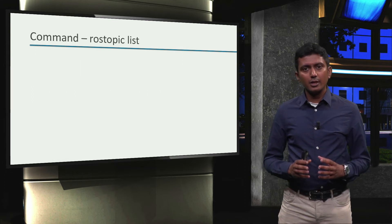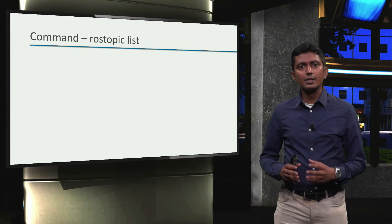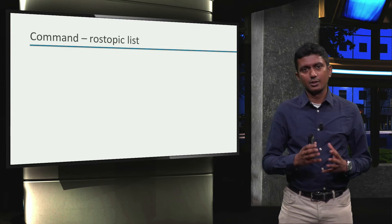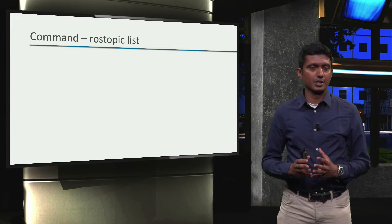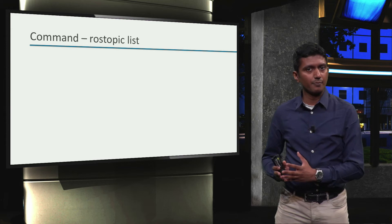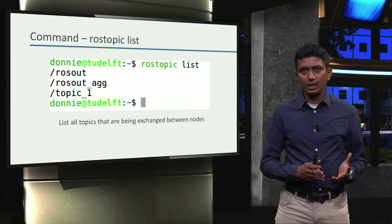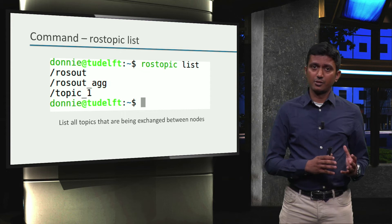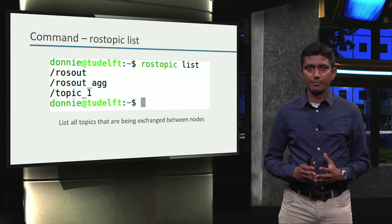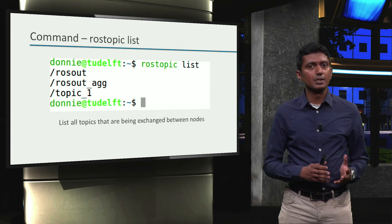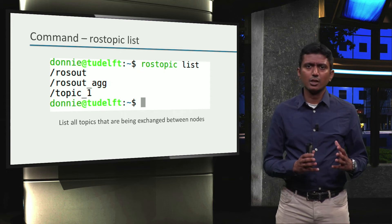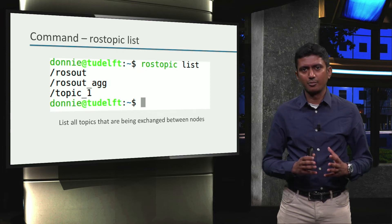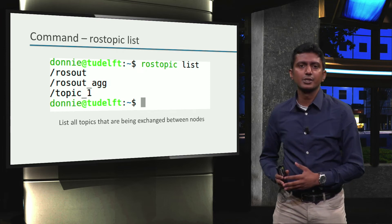The command `rostopic list` lists all topics by their names — these are the topics being exchanged between nodes. As we can see in this example, there are three topics exchanged between ROS nodes. Out of these, the first two are topics internally used by ROS, and the third topic is from the example application.